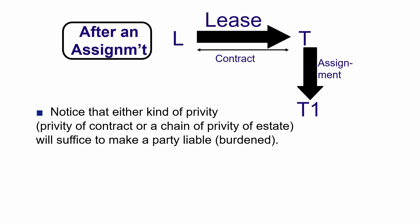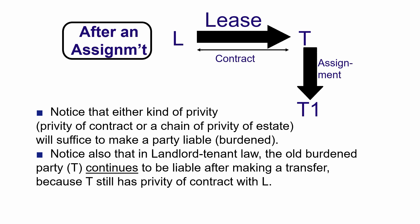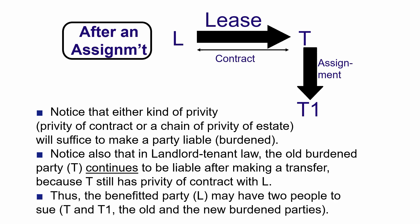Either privity of contract or a chain of privity of estate will make a party liable on the covenants. Notice that in landlord-tenant law, the original burdened party continues to be liable after making a transfer. After T makes an assignment to T1, T is still liable to the landlord because T retains privity of contract, which doesn't disappear upon assignment or sublease. So the landlord can sue T under privity of contract and T1 under privity of estate — the landlord can sue either or both.